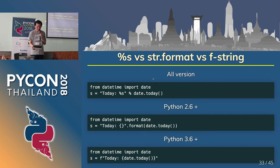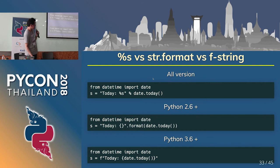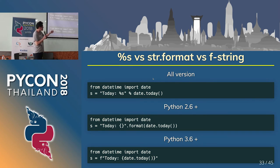Next topic: %s versus str.format versus f-string. Python has three types of string formatting. I still use %s, but I want to switch to using the dot format type. I have not used f-strings yet because they start from Python 3.6. But I think f-strings are simply the best format.